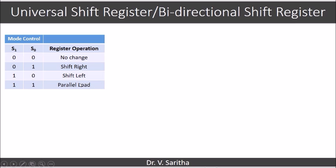Because we are able to perform four different operations using a single register, we need to decide which one to perform. So we use selection lines S1 and S0 to do that. When S1 and S0 is 0,0 we perform the no change operation — the register will not perform any operation. For 0,1 it performs as a right shift register. For 1,0 it performs as a shift left register, and 1,1 is parallel load.